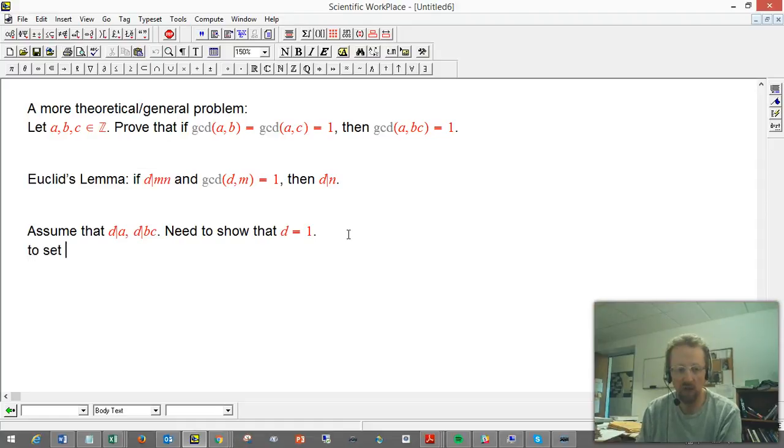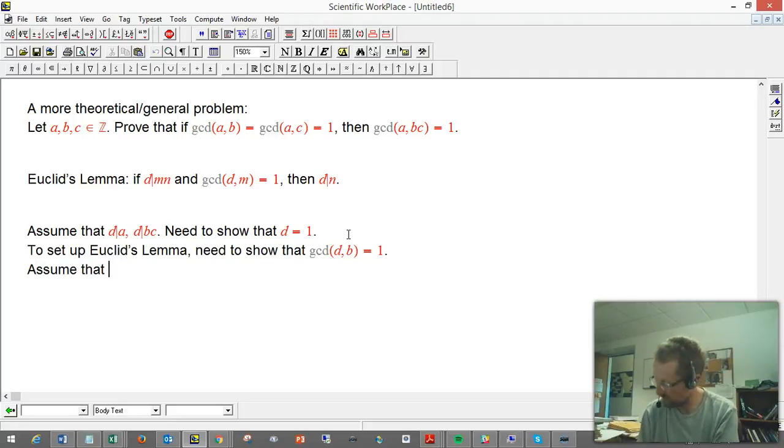So to set up Euclid's Lemma, we need to show that the GCD of D and B, for example, is equal to one. Now, that's not very hard. For me, I think it makes sense to show it as a little proof by contradiction. So, assume that the GCD of D and B, let's say E, and let's say that's greater than one. And I want to show that that can quickly go to a contradiction.